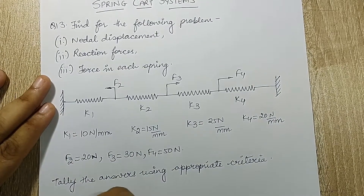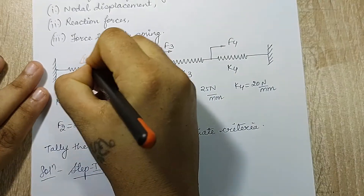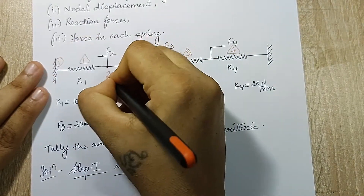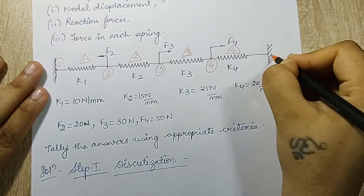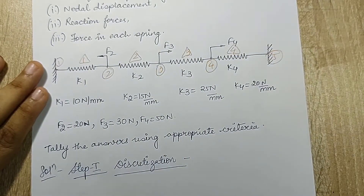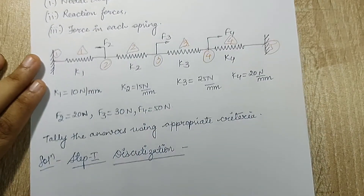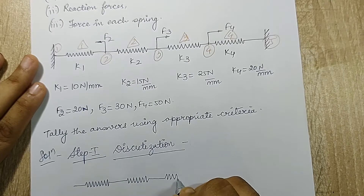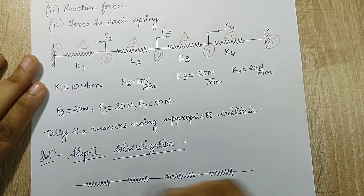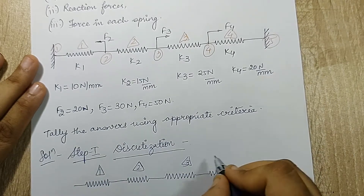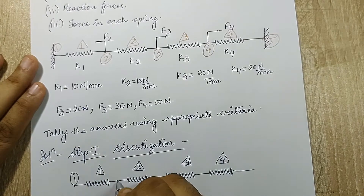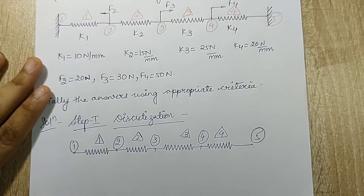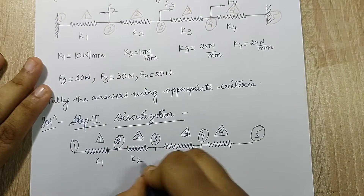The first thing I am going to do is discretize the problem. Element one, two, three, four — and the nodes are one, two, three, four, and five. In the discretization diagram I am not going to mark the fixed supports; I am just going to draw the springs. I can write down K1, K2, K3, K4.